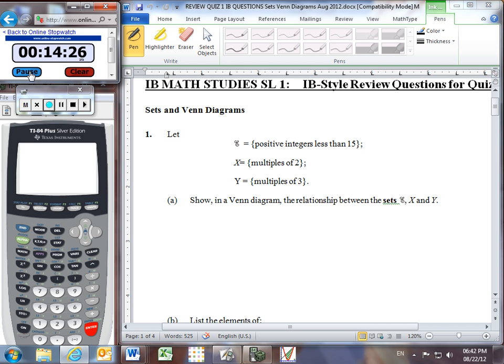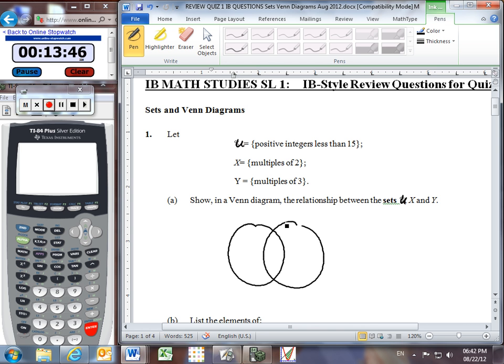We begin with number one, having a look at some different sets. We know that this one here, we're really talking about the universal set, aren't we, despite that weird notation. Positive integers less than 15, while X is the multiples of 2, Y is the multiples of 3. Part A, let's make a Venn diagram that shows the relationship between these sets, the universal set, X and Y.